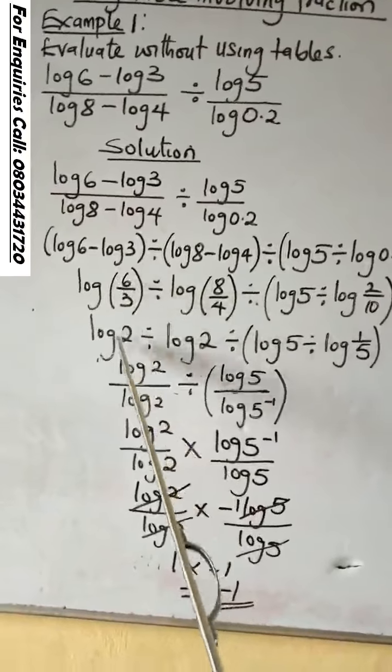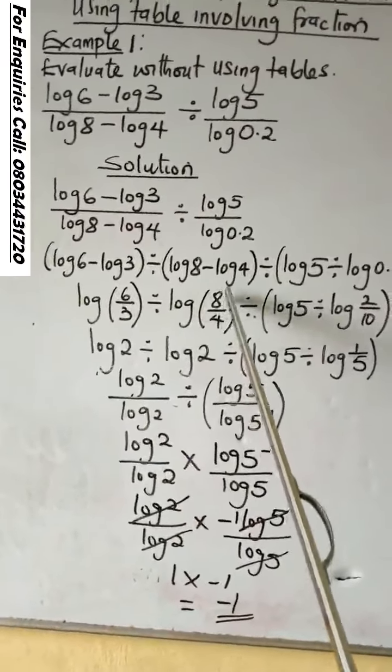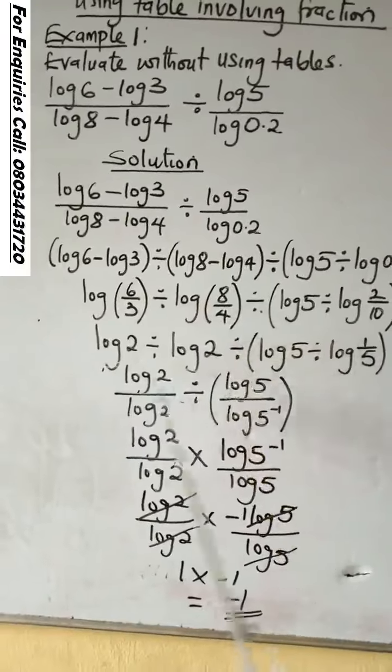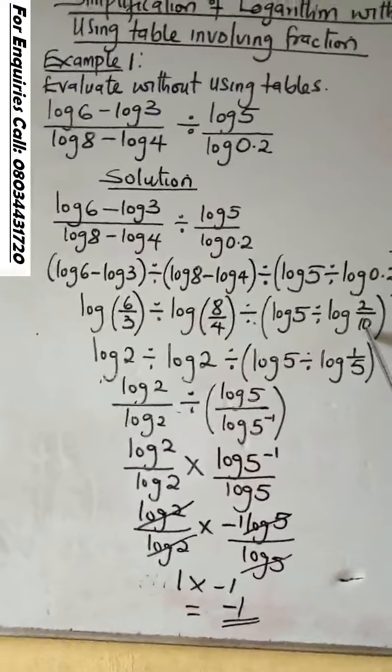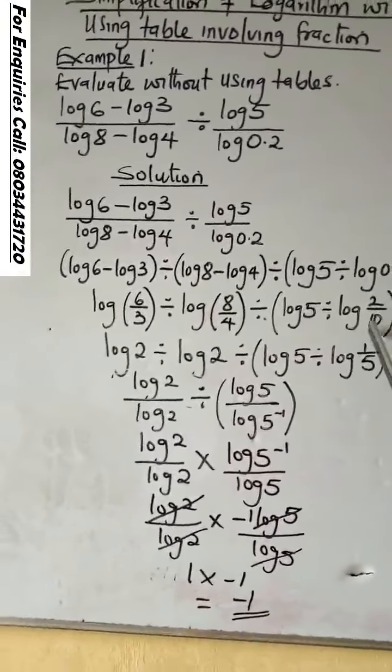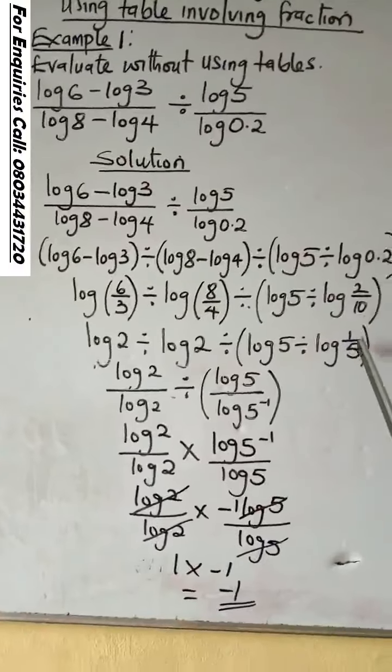Remember 6 divided by 3 is 2. 8 divided by 4 is also 2. Now let's concentrate on this part. 2 divided by 10 is the same as 1 over 5.